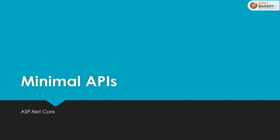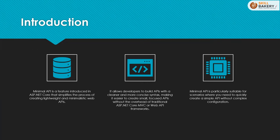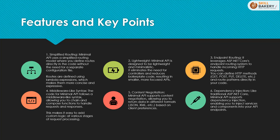Welcome everyone. In today's video, we'll be taking a look at Minimal APIs in ASP.NET Core. Minimal API is a feature introduced in ASP.NET Core 6 that simplifies the process of creating lightweight and minimalistic web APIs. It allows developers to build APIs with a cleaner and more concise syntax, making it easier to create small focused APIs without the overhead of traditional ASP.NET Core MVC or Web API frameworks. Minimal API is particularly suitable for scenarios where you need to quickly create a simple API without complex configuration.